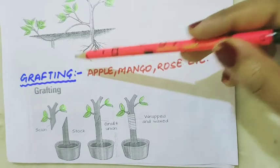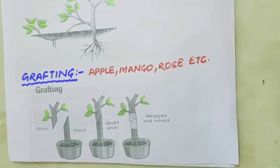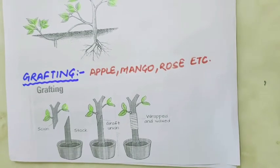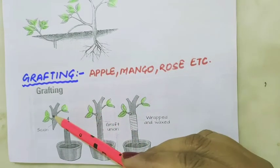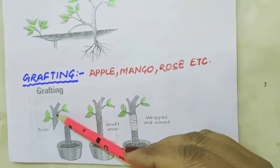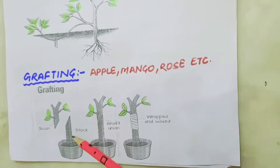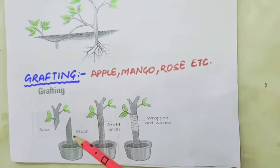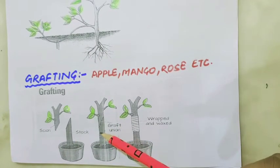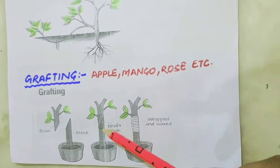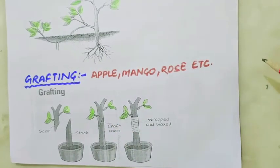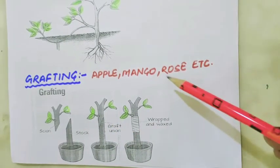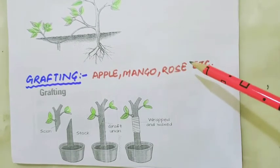Grafting is also a method of vegetative propagation in stems, where a new plant of desired qualities is developed from two different plants. The part that has the shoot is called the scion, and the part having roots is called the stock. The scion is attached to the stock, which provides support and basic requirements for the development of the plant. Grafting is done in apple, mango, and rose.